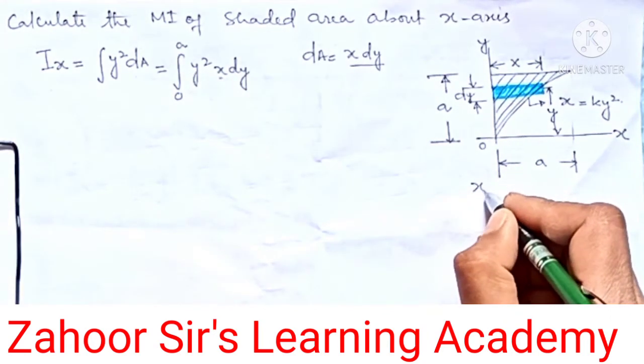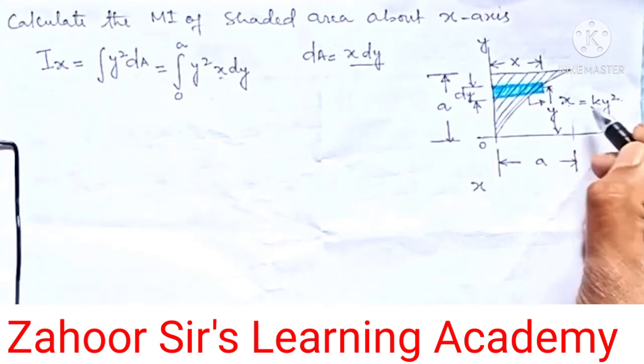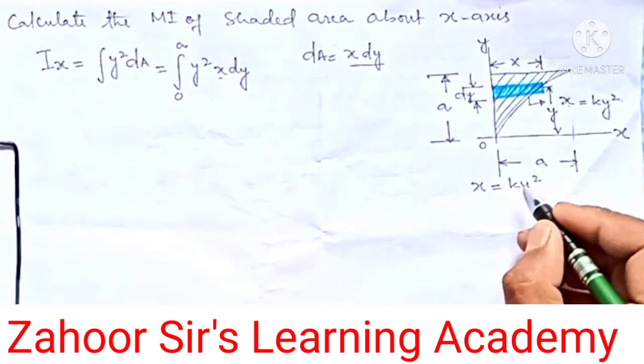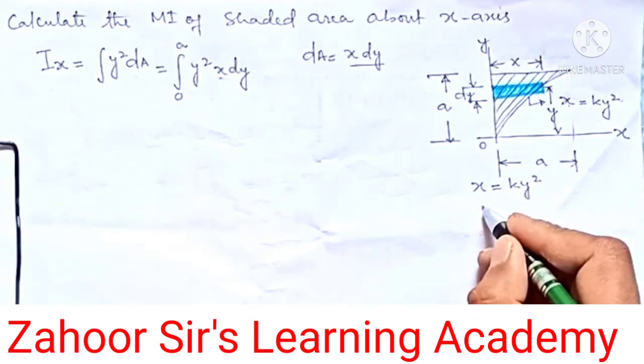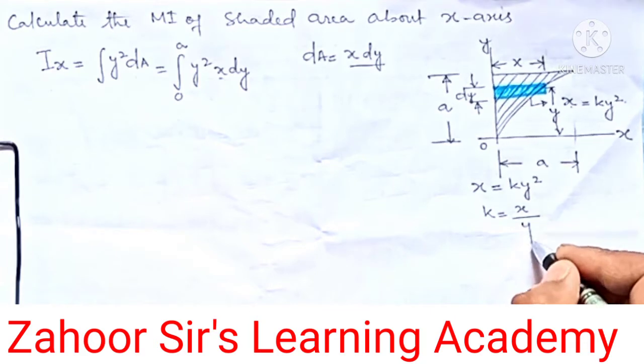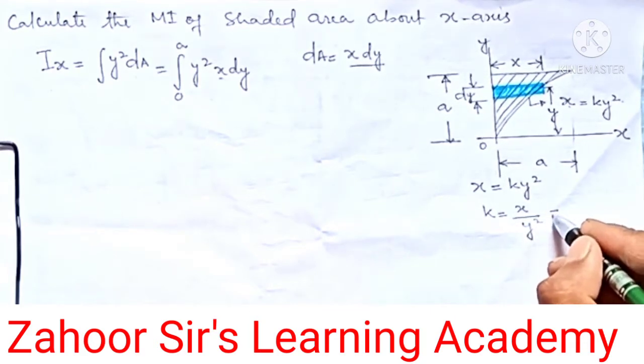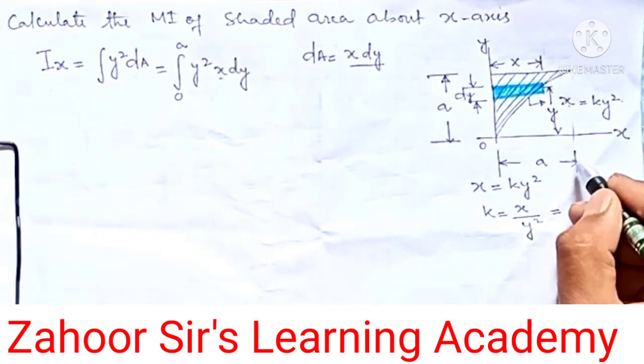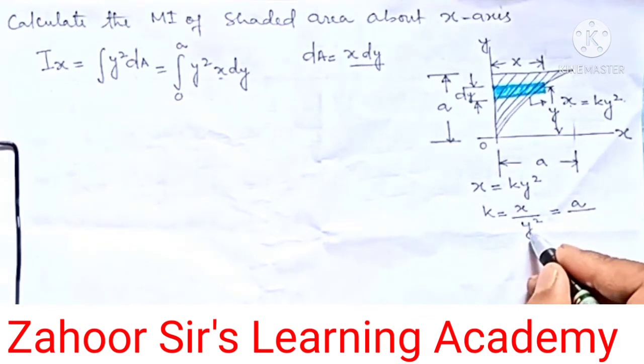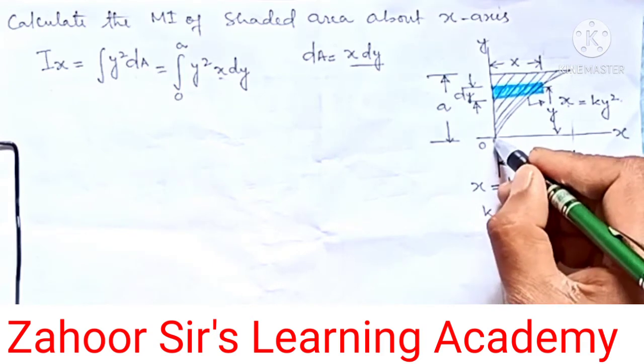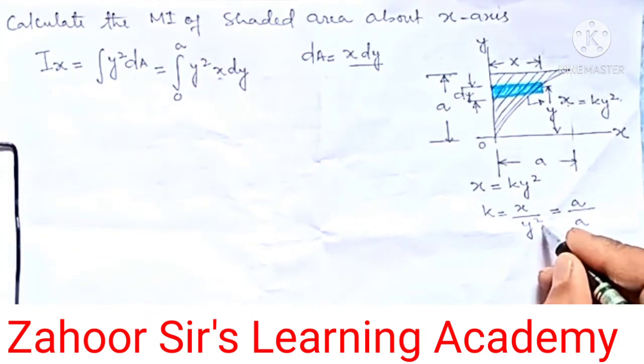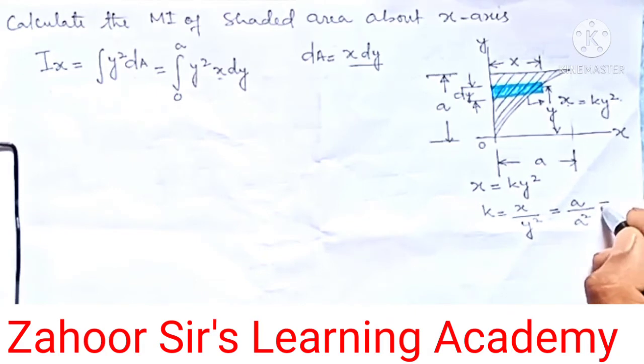Now this x needs to be removed. Therefore we know x equals k y squared. The value of k is x divided by y squared. What is the value of x? That is from 0 to a, so we can write directly a. What is the value of y? Again from 0 to a, so we can write a, but it has a square. If we cancel this one, we get 1/a.